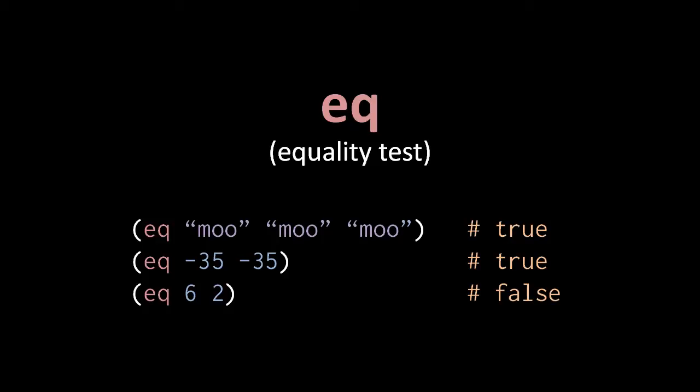To begin to do more interesting things in code, we need yet more operators. First off, the eq operator performs an equality test on two or more operands. When all the operands have the same value, eq returns the boolean value true, but otherwise returns false. So here the first two examples return true, but the last example returns false, because 6 is not equal to 2.